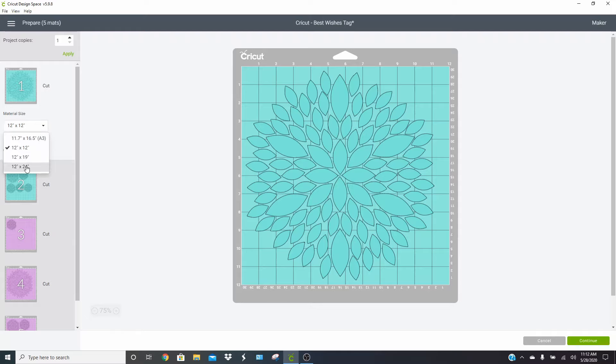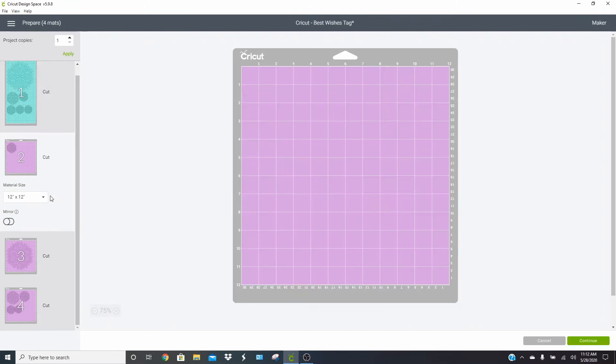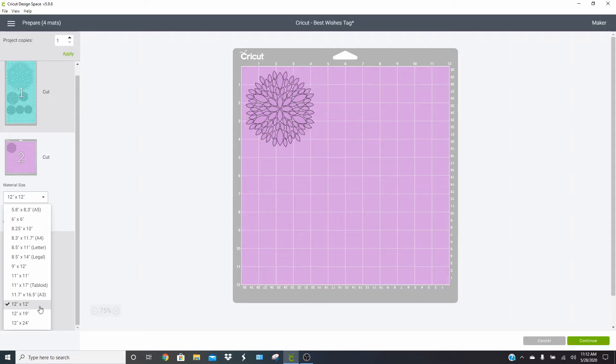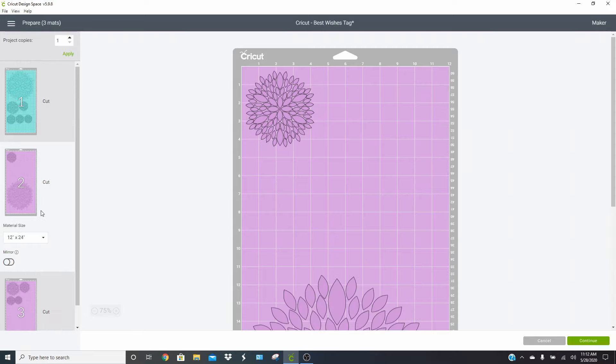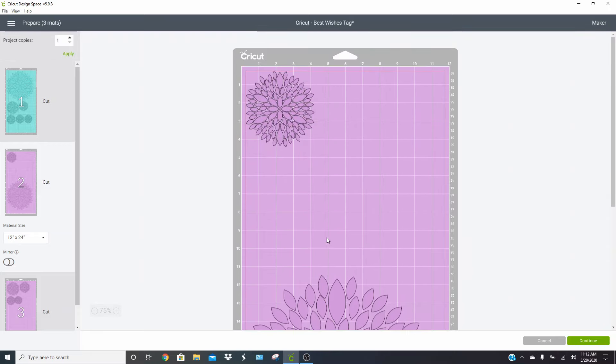I have 12 by 24 rolls, so I'm going to switch both of my designs over to the 12 by 24 and it should fit them all on one. Now this one's being a little bit funky and I almost wonder if I accidentally have something attached. So if you have something like this where it's giving you this huge space in between, go back to your make it screen and just see if anything is attached.